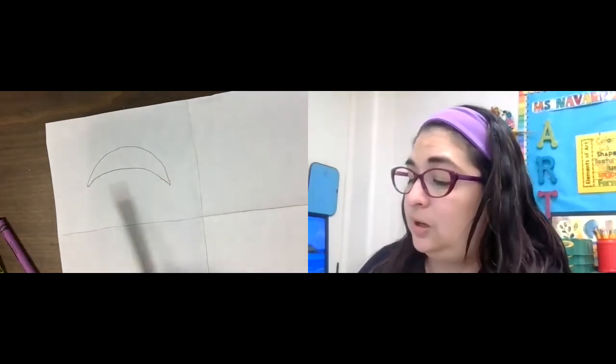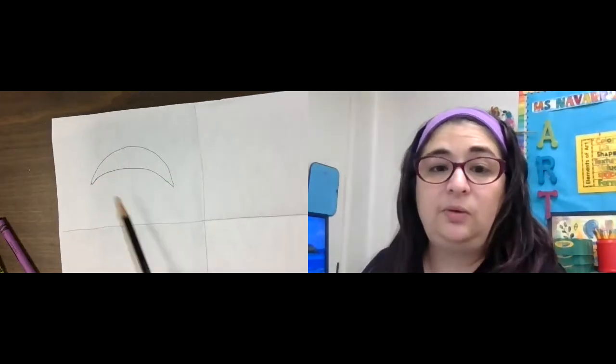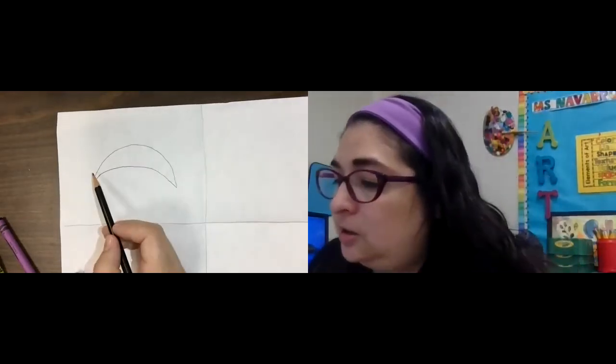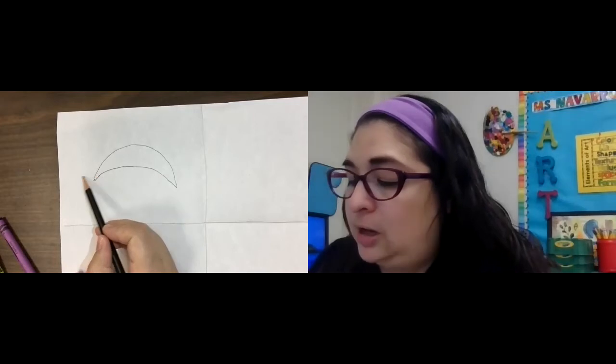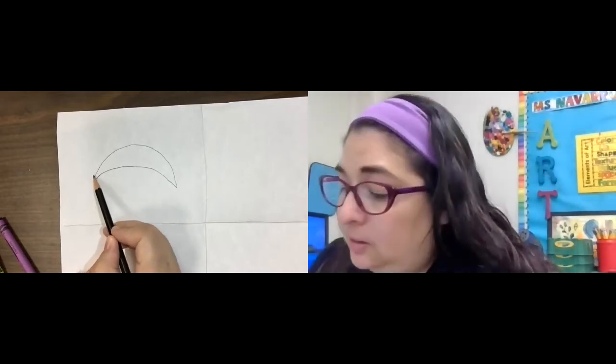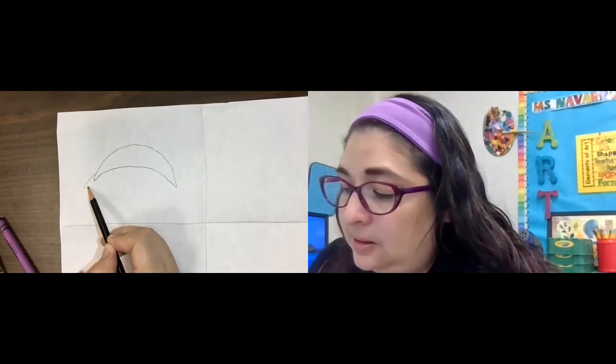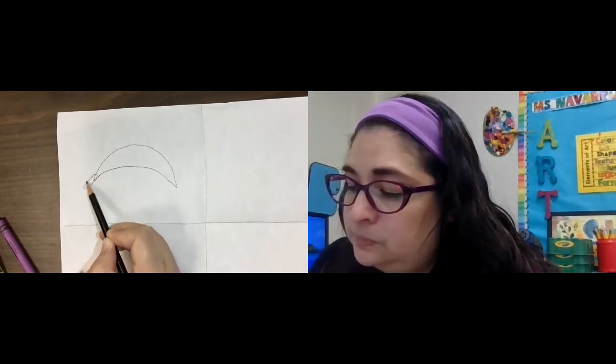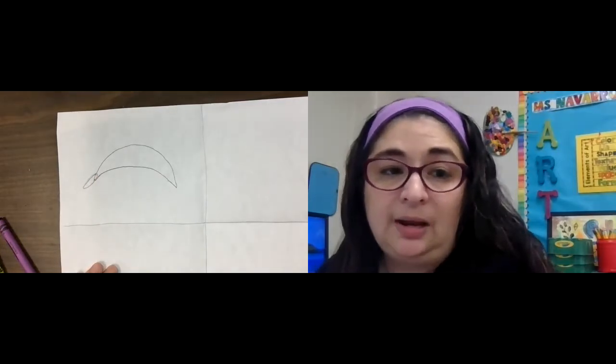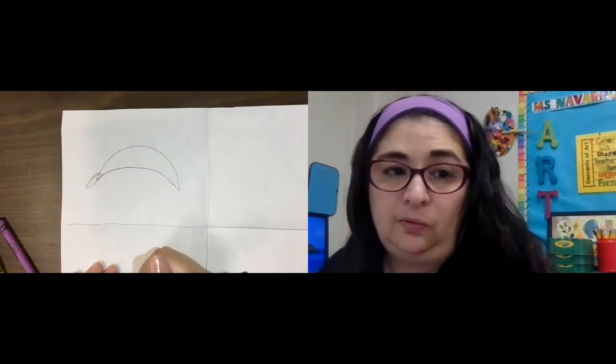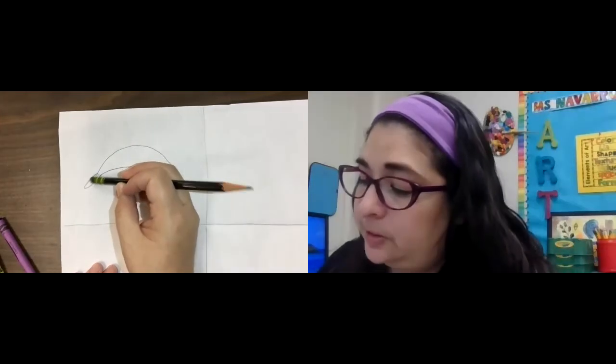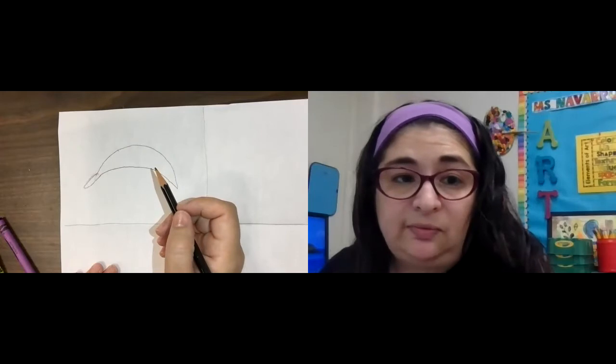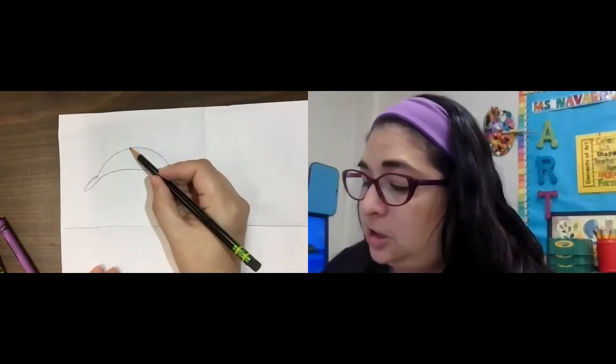Now we have this shape. This looks kind of like a moon, but it's in a different direction, right? Like a crescent. Our dolphin needs a nose. So I'm going to do like a real thin oval for his nose like this. If you don't like it, you can always erase it and start over. Now that he has his nose, he needs his fins.